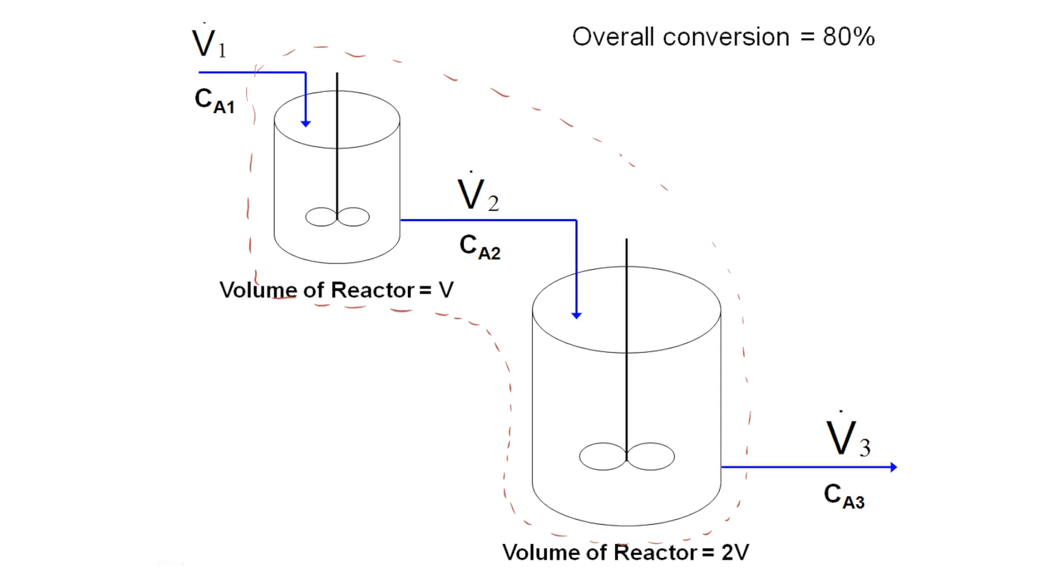So just like the definition of conversion for a single CSTR, the definition for CSTRs in series is just the difference in concentration between the inlet and the outlet divided by the inlet concentration. If we rearrange that and solve for CA3, keeping in mind that CA1 is 10 kmol per meter cubed, we get our answer for the exit concentration, which is 2 kmol per meter cubed.